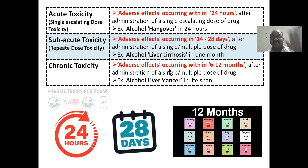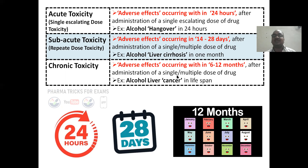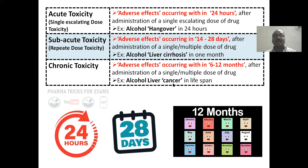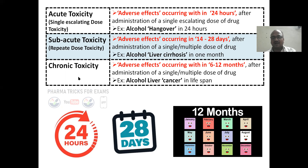Chronic toxicity means long-term — adverse effects or side effects occurring within 6 to 12 months after administration of a single or multiple dose of a drug. Example is alcohol: alcohol produces a hangover within 24 hours (acute), alcohol produces liver cirrhosis (subacute), and alcohol produces cancer (chronic). So alcohol has three effects: acute toxicity, subacute toxicity, and chronic toxicity.